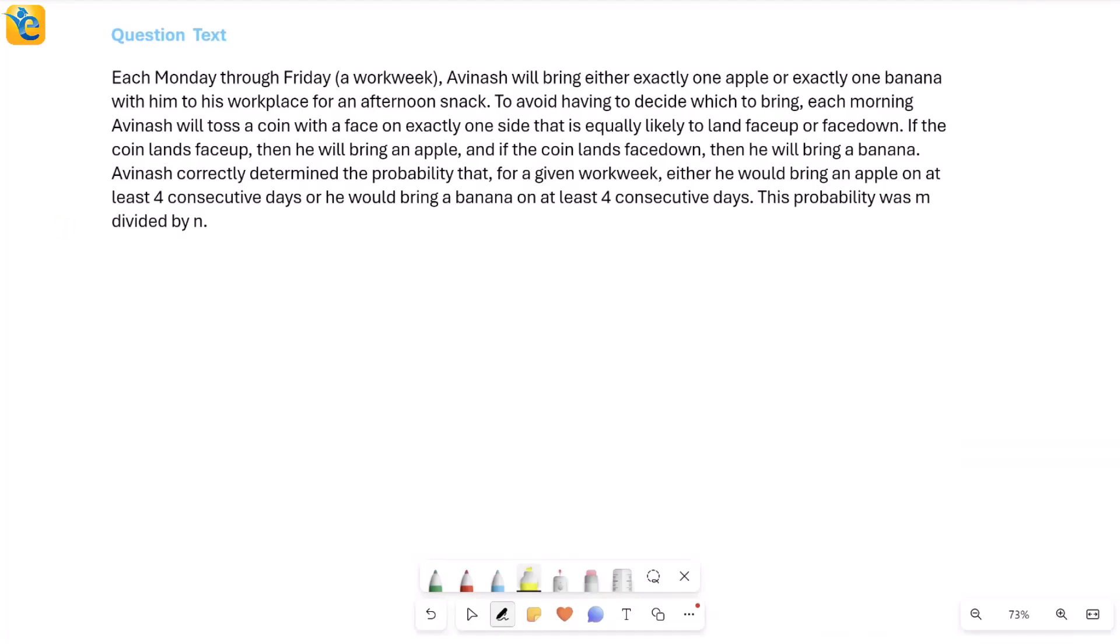Let's solve this. Each Monday through Friday, which is a work week, Avinash will bring either exactly one apple or exactly one banana with him for afternoon snack. Now this is for a five-day week we're talking about, and there's this person who's bringing either one apple or one banana. Both things are not happening, exactly one of these he's going to bring.